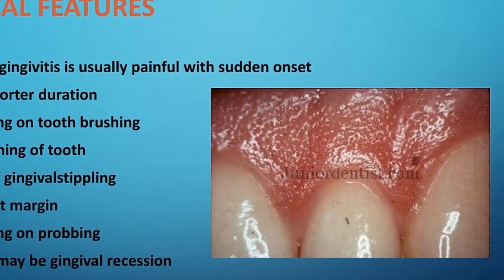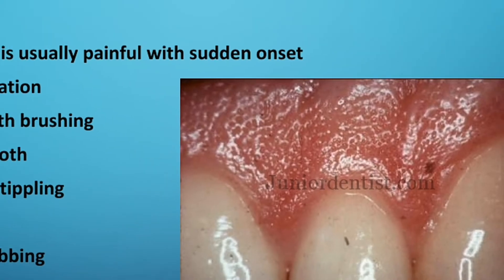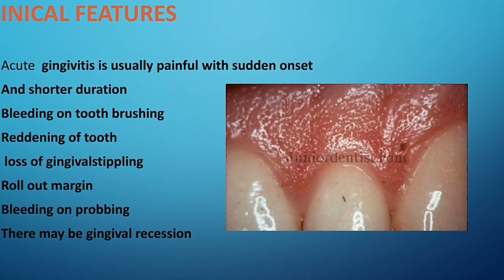There is also a loss of gingival stippling. The gingiva normally has many small dot-like structures — similar to what you can find on an orange peel — and these are called gingival stippling. In gingivitis, these dot structures disappear and the gingiva becomes smooth. There is also a rolled-out margin, meaning the gingiva is enlarged and looks like a ring around the tooth. Additionally, there is bleeding on probing — when you gently poke with a dental probe, you can feel bleeding from the gums.